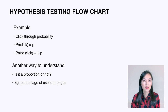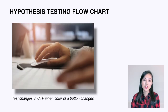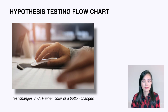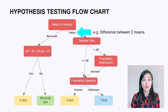Similarly, click rate and conversion rate can also be considered as following a Bernoulli distribution. Another way to understand it is to see if what we want to test is a proportion or not — for example, percentage of users or pages. If we want to compare proportions of two groups, such as if there's a change in click-through probability when we change the color of a button, we would go this route.